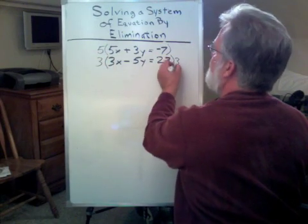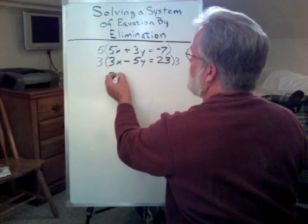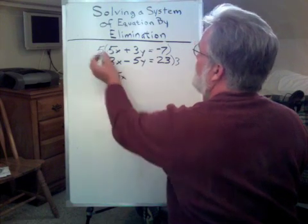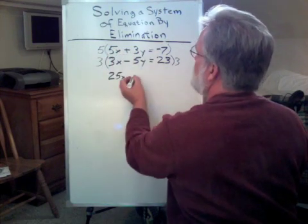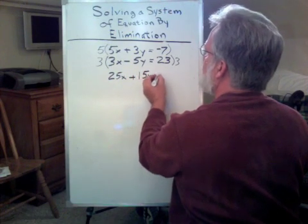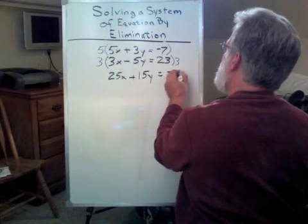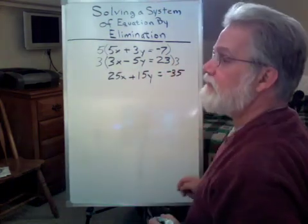5 times 5x is 25x. 5 times positive 3y is 15y. And 5 times negative 7 is negative 35.